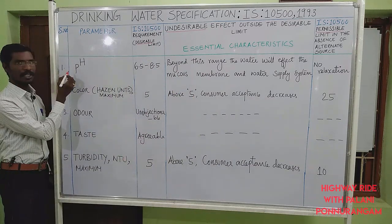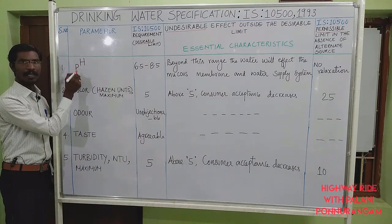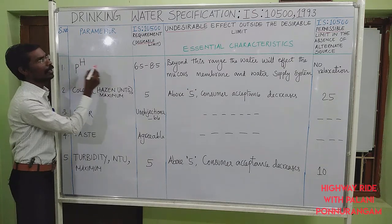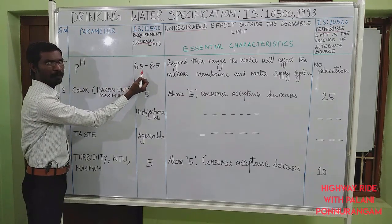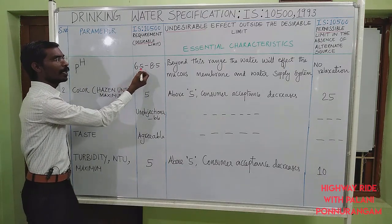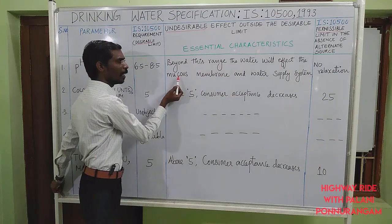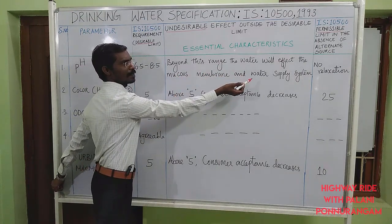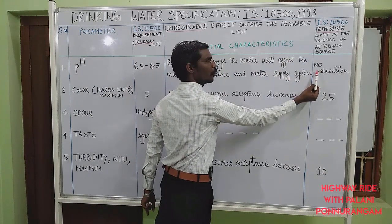The first essential quality is pH, that is the presence of hydrogen ion. The desirable limit should be 6.5 to 8.5. If it is beyond the limit, the range of water will affect the mucosal membrane and the water supply system. For the permissible limit, there is no relaxation.